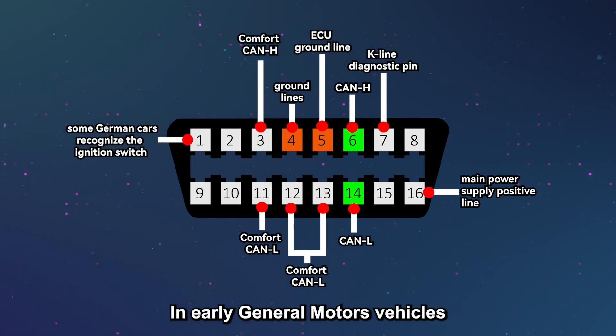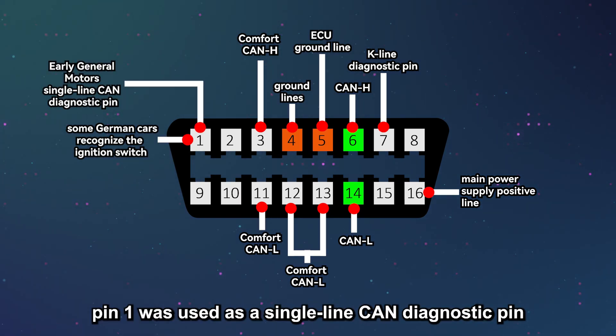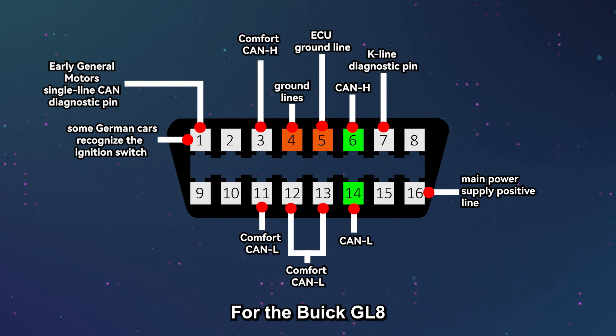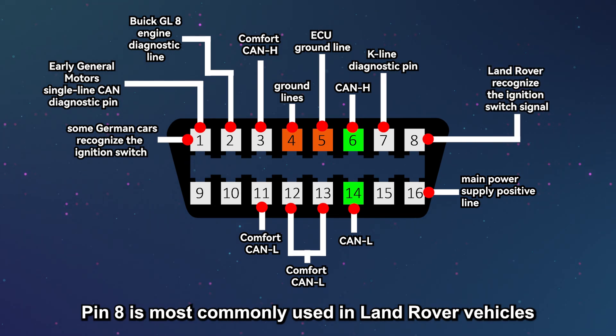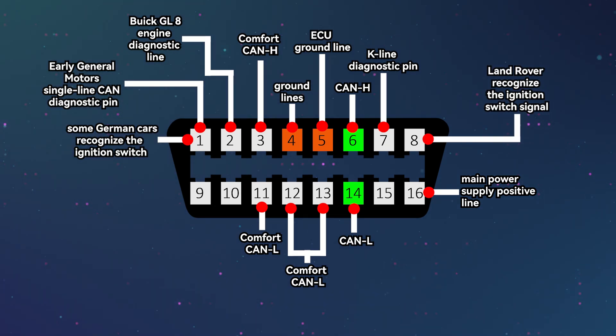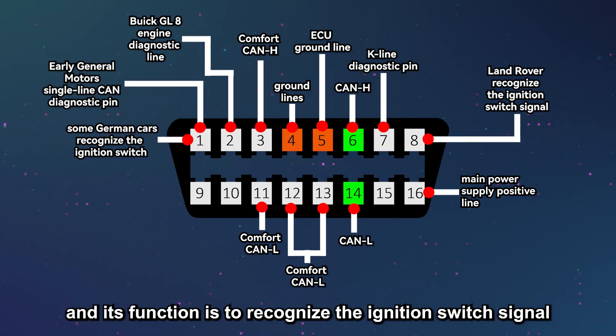There is another case. In early General Motors vehicles, pin 1 was used as a single-line CAN diagnostic pin. For the Buick GL8, pin 2 is used as an engine diagnostic line. Pin 8 is most commonly used in Land Rover vehicles, and its function is to recognize the ignition switch signal.